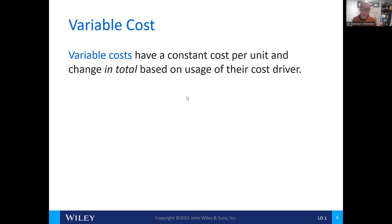Variable costs are costs that go up and down based off of the level of output or the level of activity. They have a constant cost per unit, and they change in total based off of their cost drivers. The variable cost represents the direct materials, direct labor, and variable overhead that make up the total cost per unit. On a per unit basis, the cost is the same.